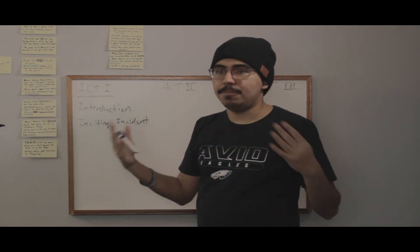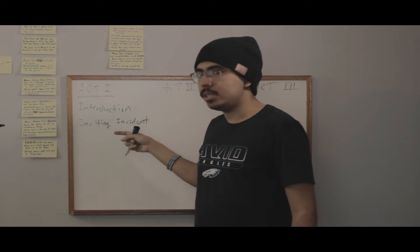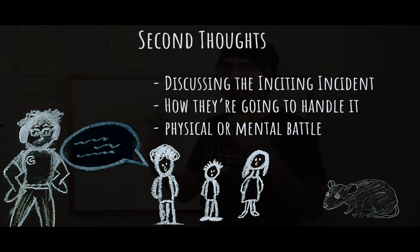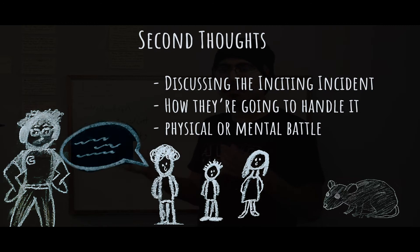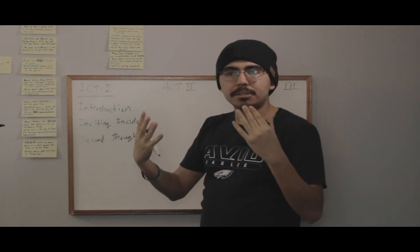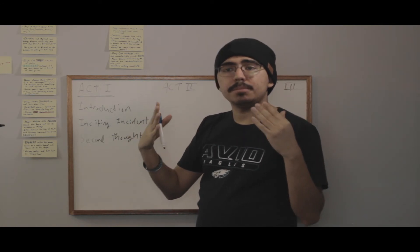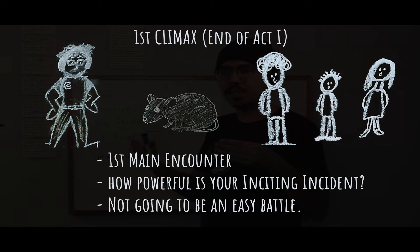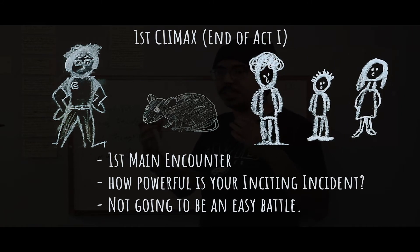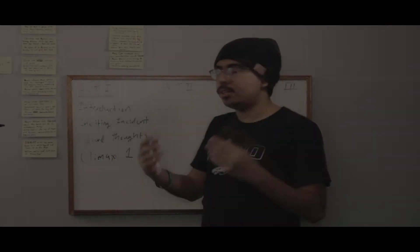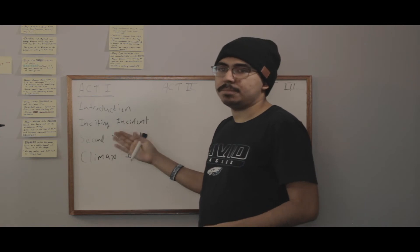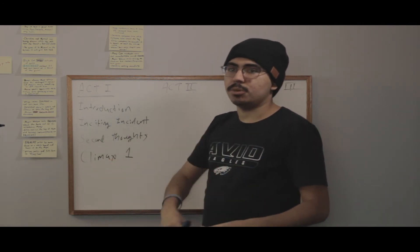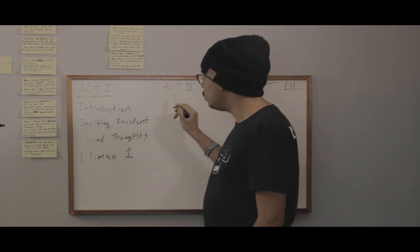A story without conflict isn't really a story at all. Always make sure to have an inciting incident — every film has that, good films and bad films. You always need to have a problem. Second thoughts is something that the supporting characters come together and try to think of — how are they going to deal with that specific problem, whether it be a physical battle or a mental battle. This then results in your first climax, when a small battle begins to disrupt the town, showing just how powerful or dangerous your inciting incident is, whether it's a person or a force of nature.